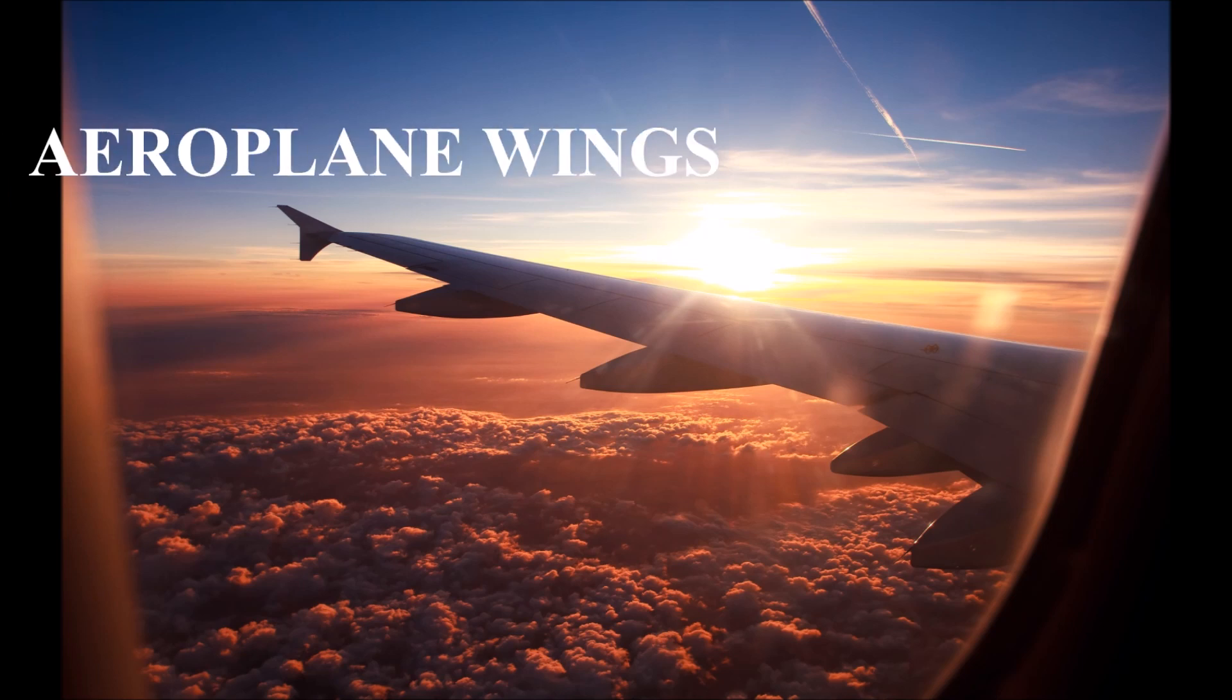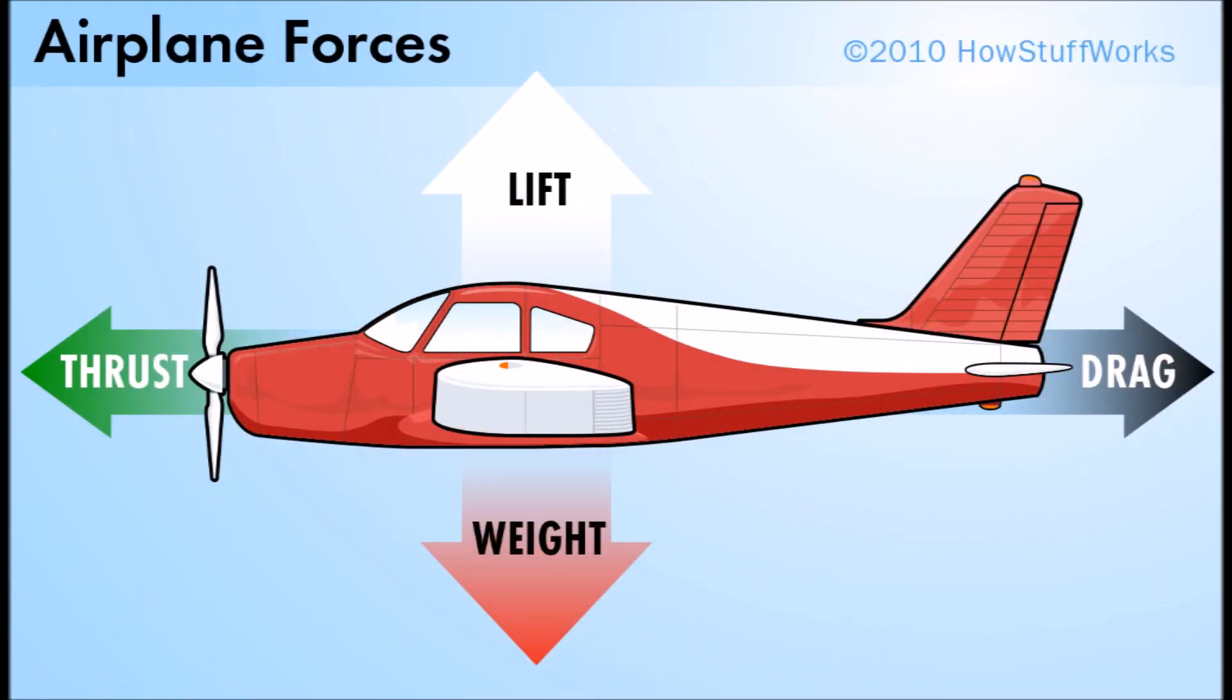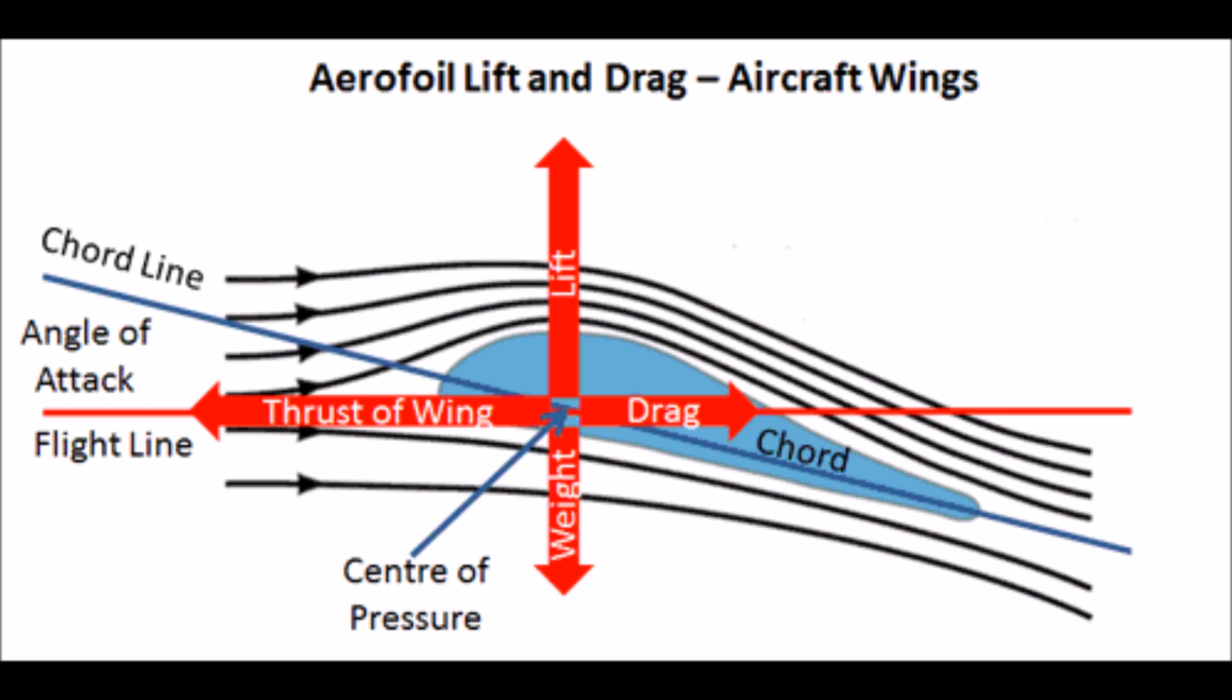In an aeroplane, the lift and drag forces are the main forces by which the aeroplane moves. The lift force is the force which directly opposes the weight of an aeroplane and holds it in the air. Lift is generated by every part of the aeroplane, but most of the lift on a normal airline is generated by the wings.